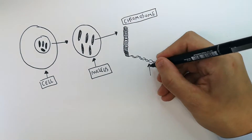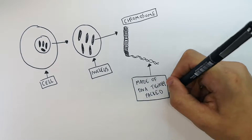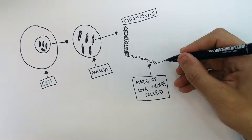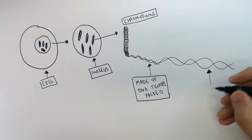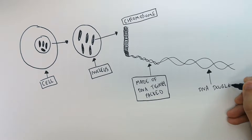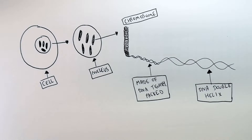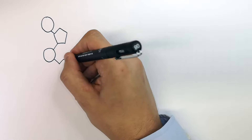Chromosomes are made of tightly packed DNA. The DNA structure is what we call a double helix. Now we're going to look at the structure of DNA.